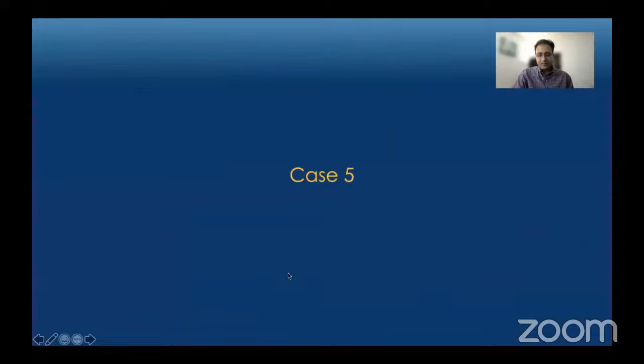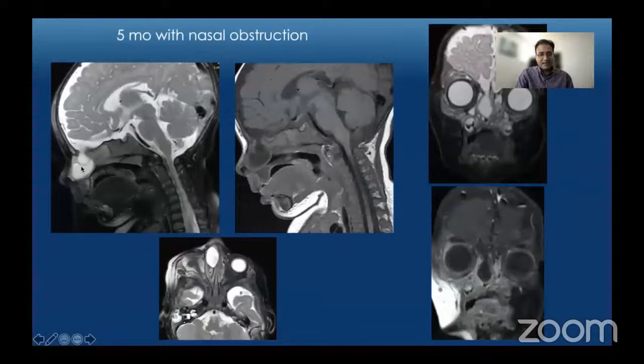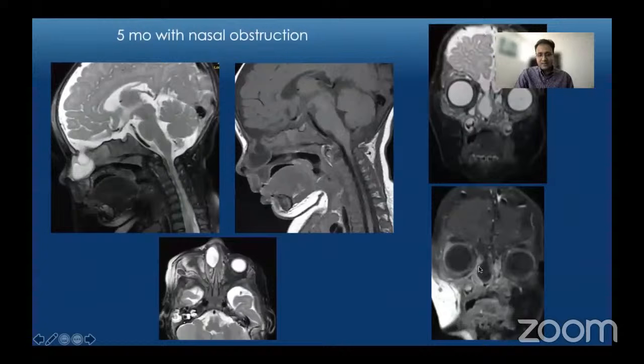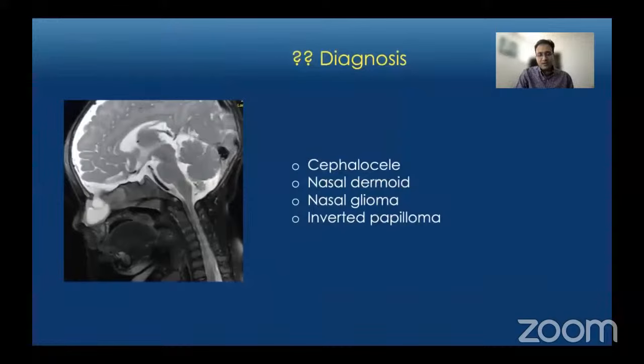The next case is a five-month-old who presented with nasal obstruction. On sagittal T2 and T1-weighted images there is a bilobed mass extending into the nasal cavity. The mass appears to communicate with the subarachnoid space via a defect in the cribriform plate. On axial and coronal images the same findings are seen, and on post-contrast images there is enhancement of mucosa surrounding the cystic mass but no enhancement within the mass itself. The diagnosis is an encephalocele.